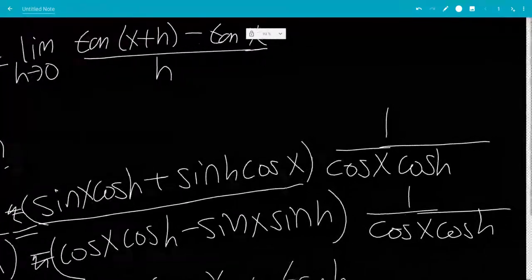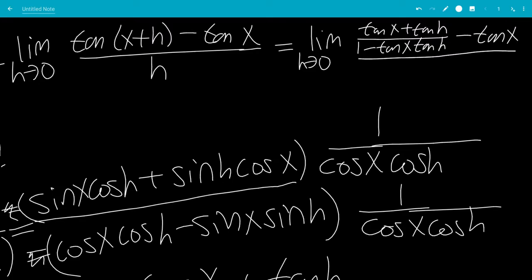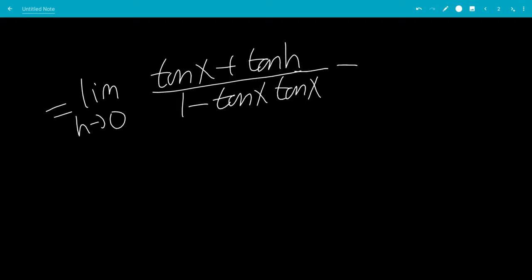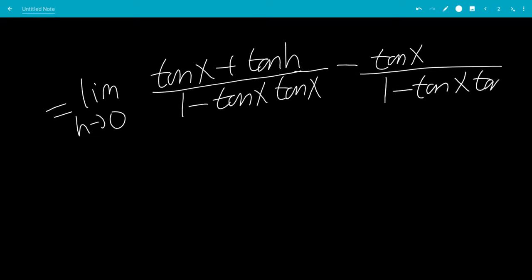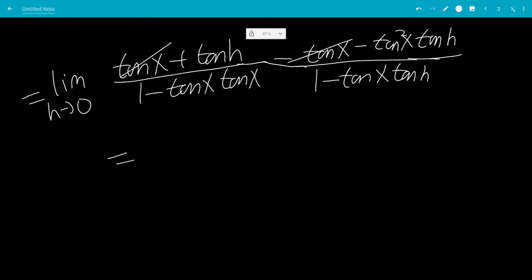So let's plug that in. This will be the limit as h goes to 0 of tangent x plus tangent h minus tangent x, all over h, times 1 minus tangent x tangent h. We do a common denominator, and after expanding we get tangent x minus tangent x squared tangent h. The tangent x and minus tangent x terms cancel.